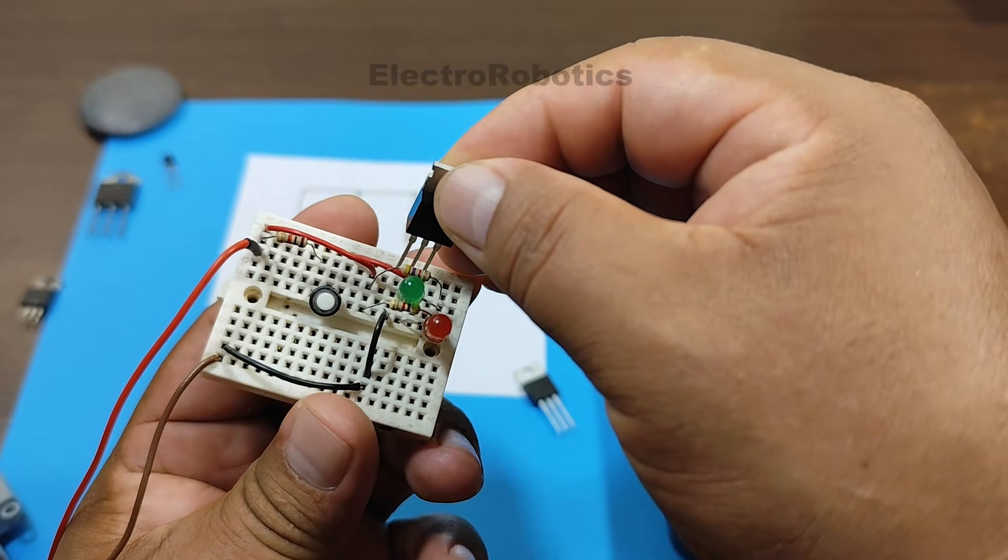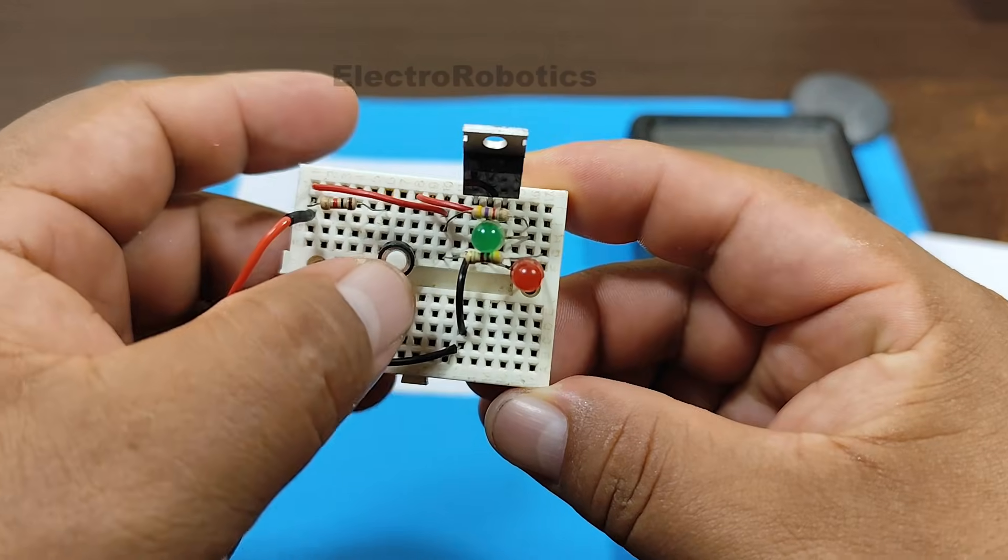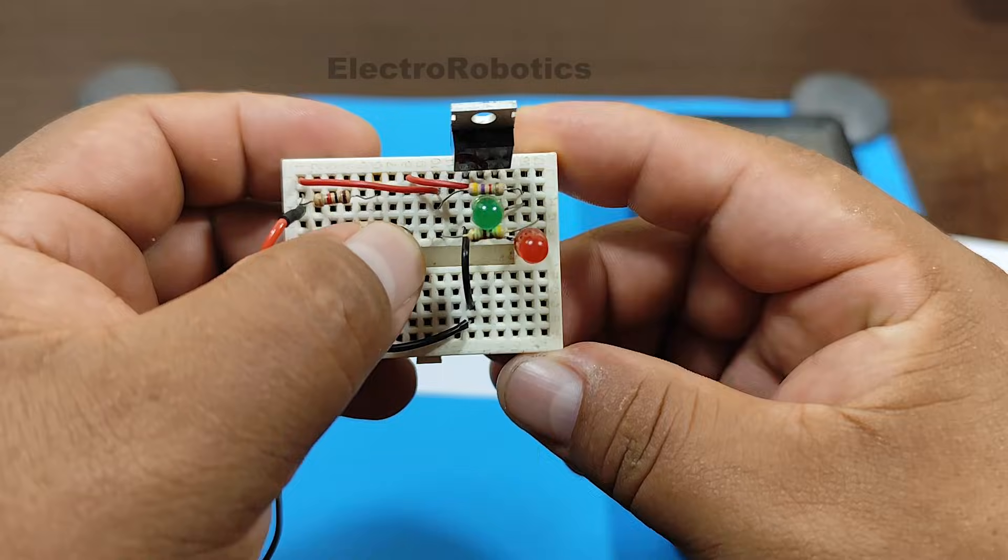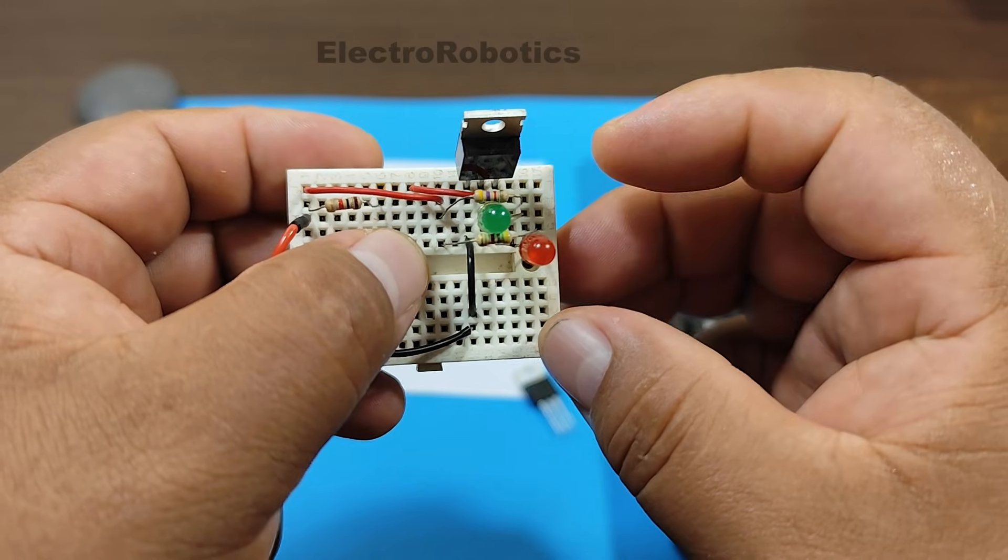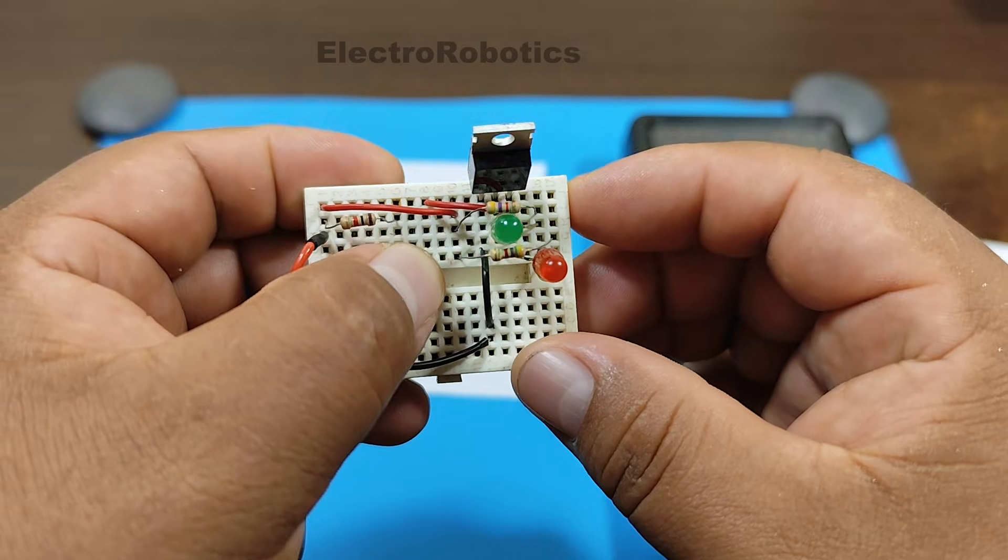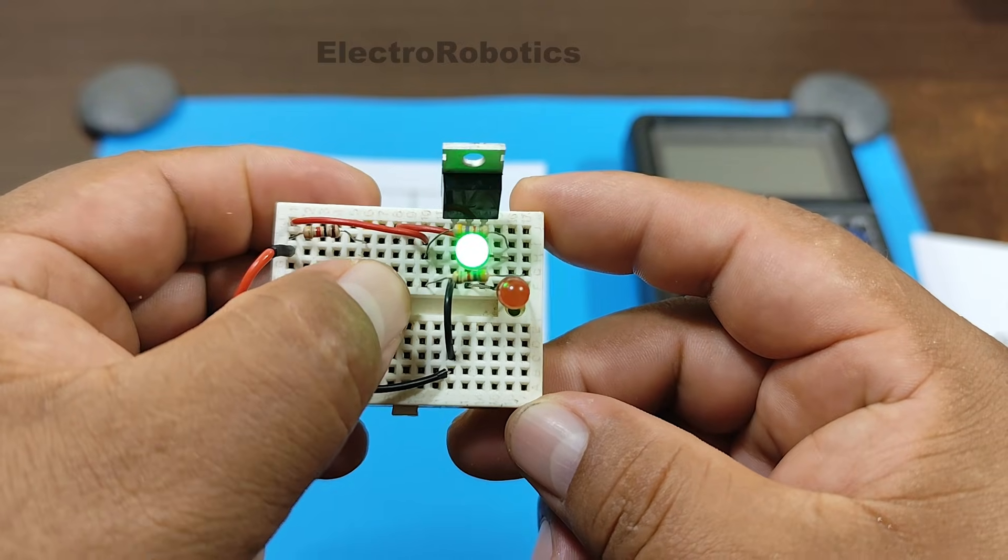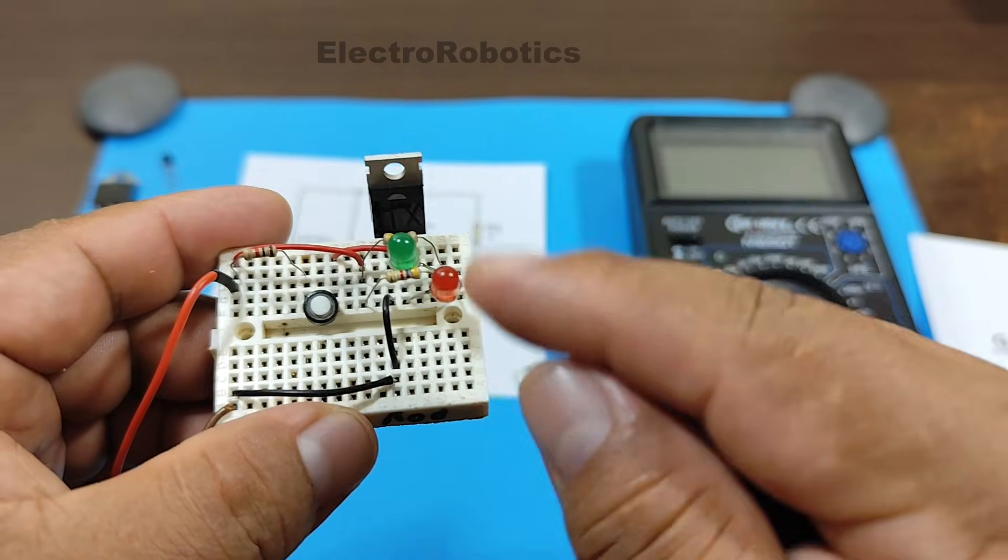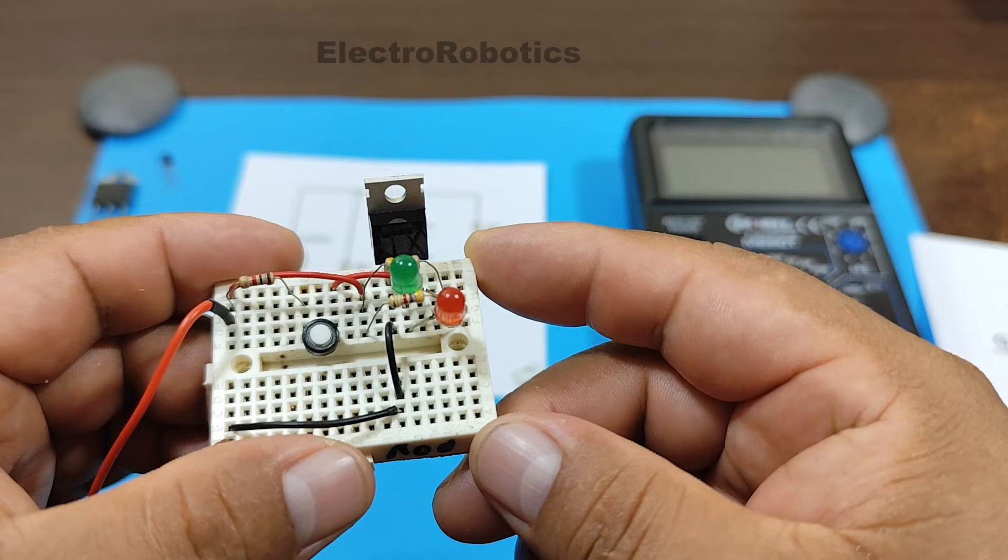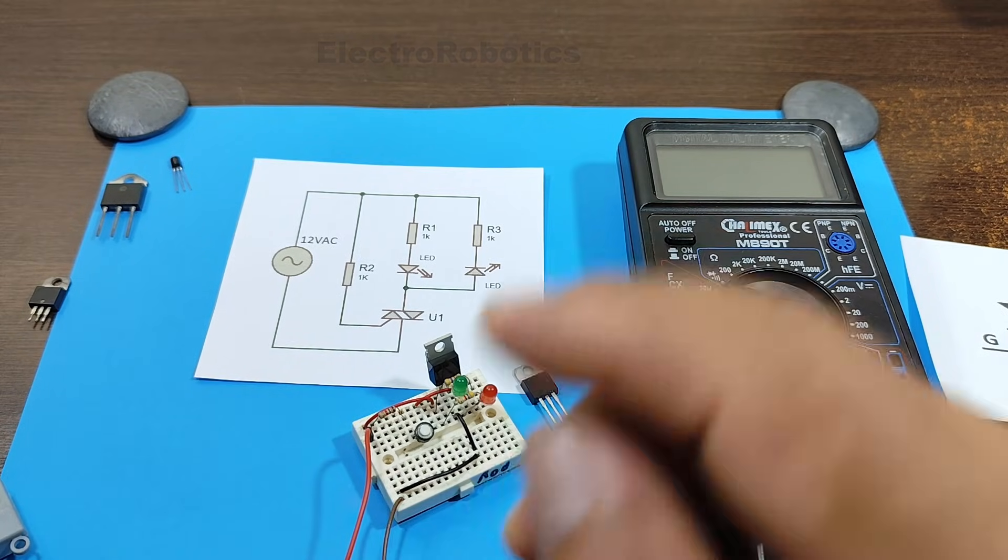Keep in mind that the pinout is the same as the triacs. We press the push button. And only one of the LEDs lights up. This confirms that the triac does allow both cycles of alternating current to pass. Very good. Now let's look at another circuit.